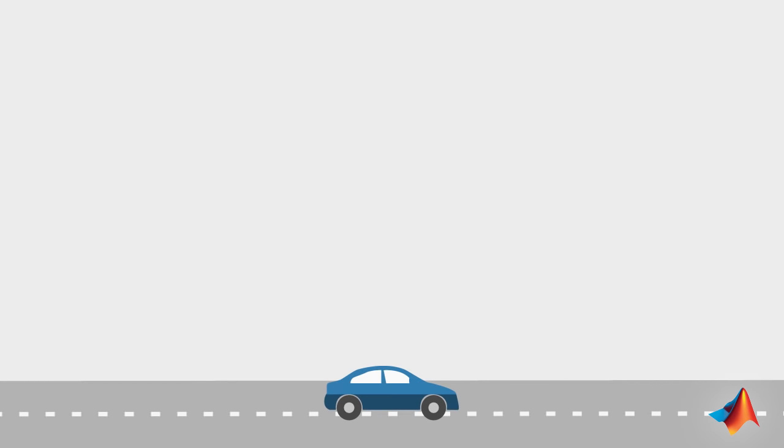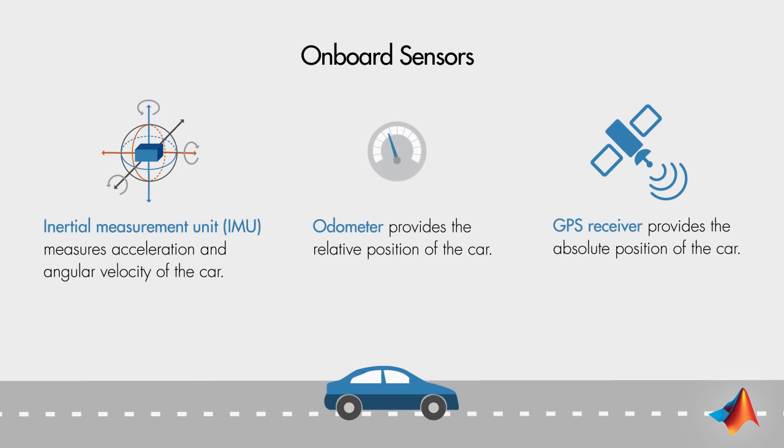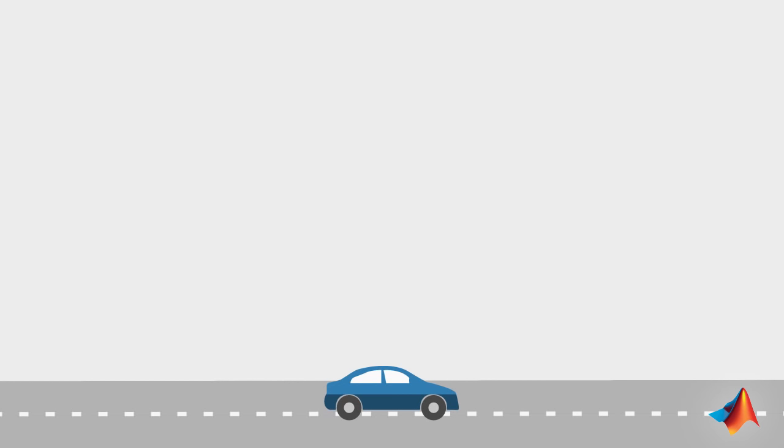You're using your car's navigation system. Let's look at the sensors you have on board which help you find your position and navigate you to the airport. The inertial measurement unit uses accelerometers and gyroscopes to measure the car's acceleration and angular velocity. The odometer measures the relative distance traveled by the car. The GPS receiver receives signals from satellites to locate the car on Earth's surface.